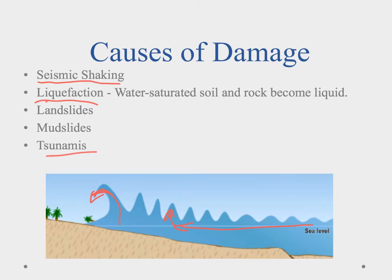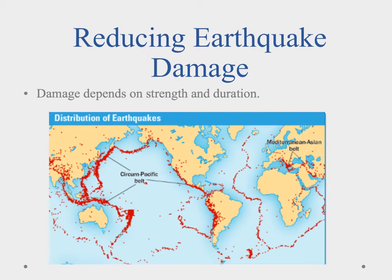We can measure tsunamis by speed, and there's a series of buoys throughout the Pacific that measure for these after an earthquake. So how can we reduce earthquake damage? The damage is going to depend on the strength and duration — how strong the earthquake is and how long the shaking goes on — and that's what determines how much damage occurs.